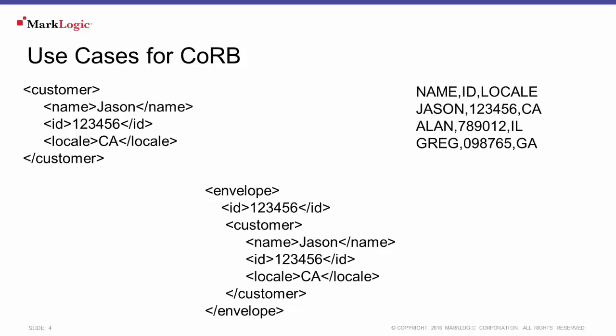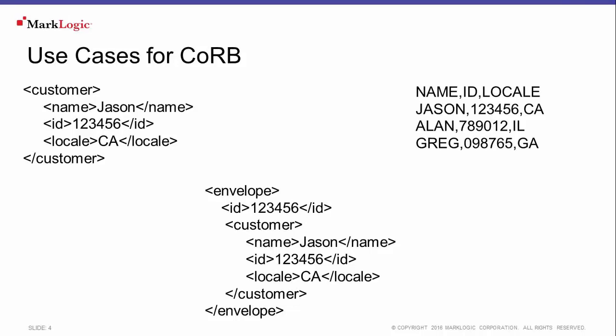The second main use case is to generate reports. The same mechanisms that allow CORB to step through many documents for modification can be leveraged to generate a report. These reports can be CSV files or some other simple text file with headers. You can also generate XML or JSON files, which could be used with a PDF generator or to drive other processes.